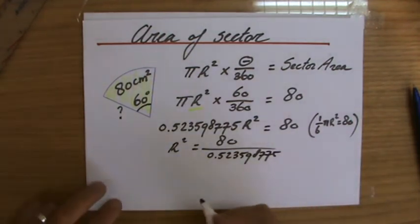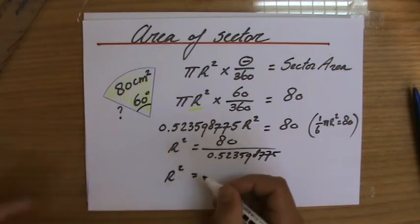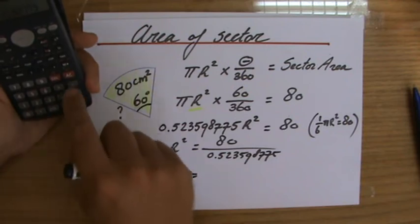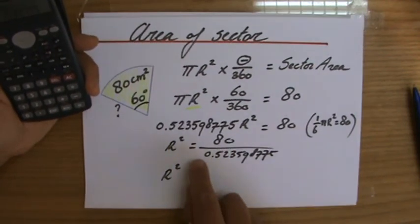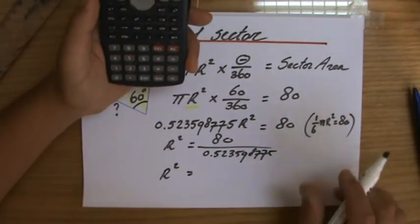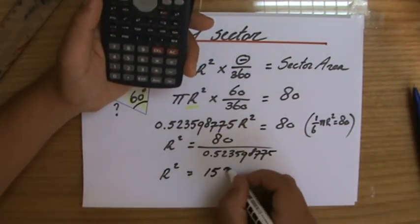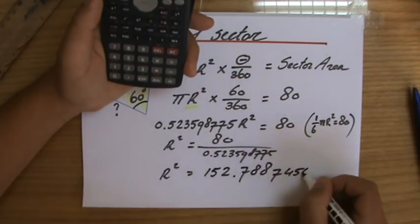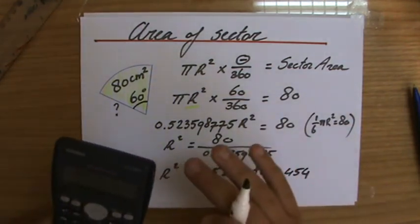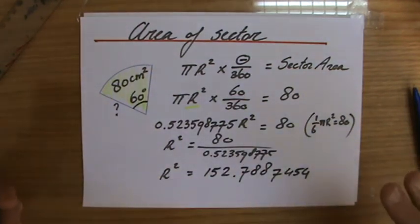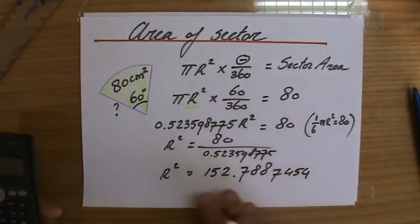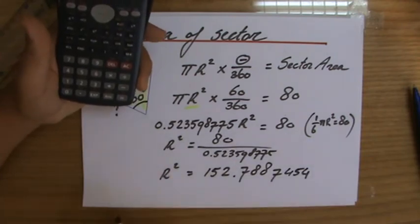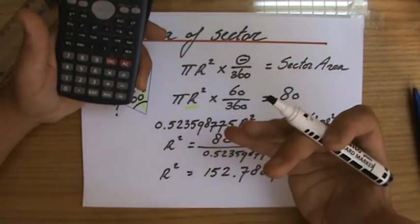Let's work it out - 80 divided by a sixth of π, divided by those decimals, it's going to give me 152.788745. All the decimals - do not round in the middle of your calculations because you can only round in your final answer, because if I round now that will affect my final answer. r² equals that answer, so what is the inverse operation of squaring?